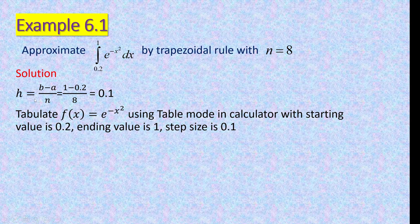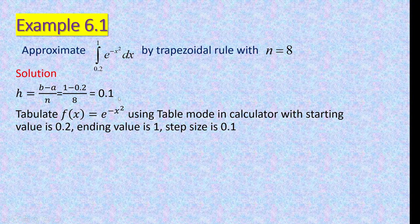If given n, you find h. h = (b − a)/n = (1 − 0.2)/8 = 0.8/8 = 0.1. After that, we tabulate f(x) = e^(−x²) using the table mode on your calculator, where the starting value is the lower limit (a = 0.2), the ending value is the upper limit (1), and the step is h = 0.1.